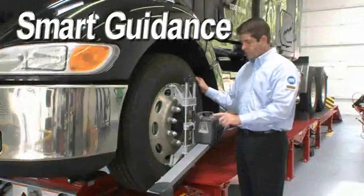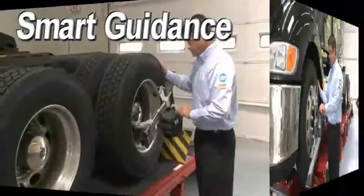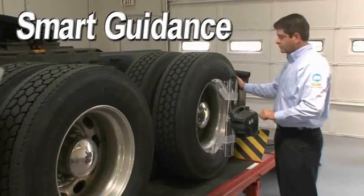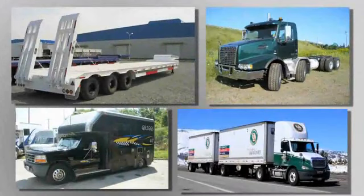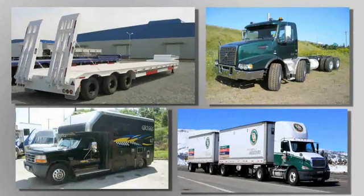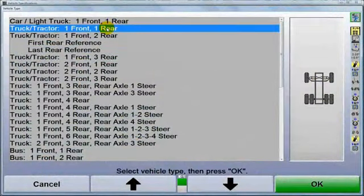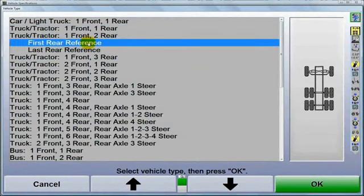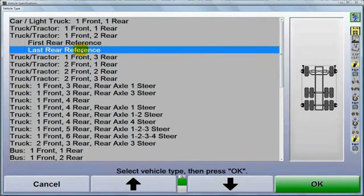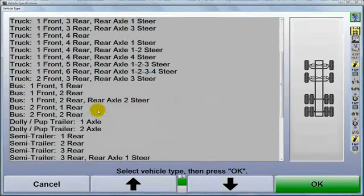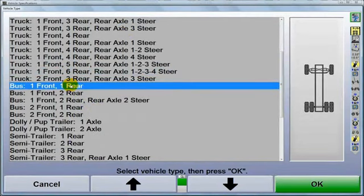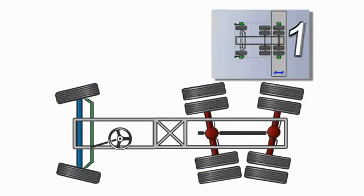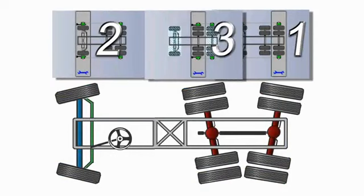To align a multi-axle vehicle accurately and efficiently, the axles should be measured and adjusted in a certain sequence. The sequence is dictated by the number of adjustable axles and their location. By selecting the vehicle configuration first, the aligner will set up and guide the technician through the most efficient sequence for that vehicle. This can mean the difference in getting it done right the first time or a costly redo. Don't assume all of your technicians know exactly what order everything should be done.